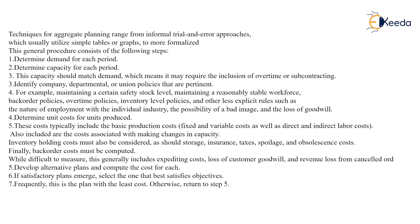The general procedure consists of the following steps: first, determine the demand for each period; second, determine the capacity for each period. This capacity should match with the demand, which may require the inclusion of overtime or subcontracting. Third, identify the company, departmental, or union policies that are pertinent — for example, maintaining a certain safety stock level.